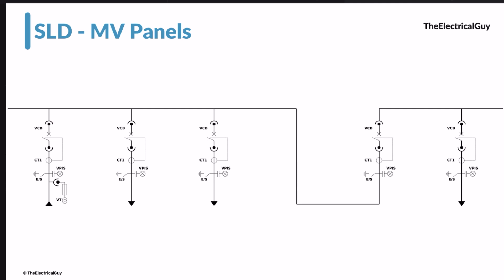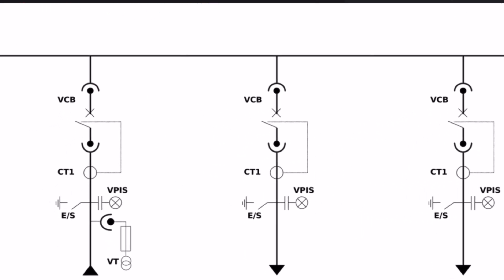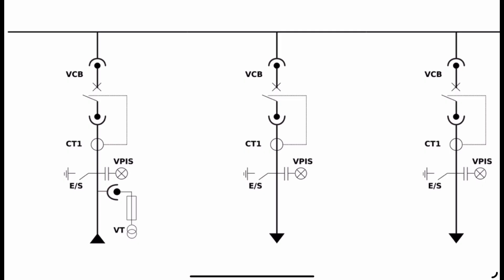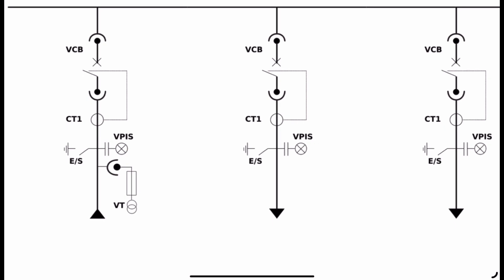To provide supply to the factory units, first of all we need to take the supply from the local electricity distribution company or local electric substation. Here is our first panel. The symbol pointing upward means this is the incoming supply — this is where the cables are entering. Here we will connect the cable.